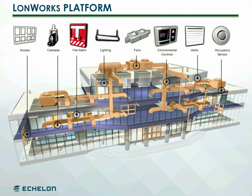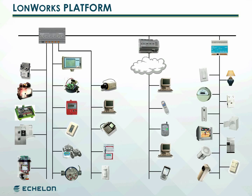The LawnWorks platform allows manufacturers to produce network devices such as sensors, actuators, and controllers that work together interoperably with products from other manufacturers. Since all of the underlying networking infrastructure has already been developed by Echelon, device developers can concentrate on designing the best possible applications. LawnWorks networks range in sophistication from small networks embedded in machines to large networks with tens of thousands of devices spread across the globe. More than 100 million devices have been shipped to date for use in applications around the world.